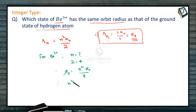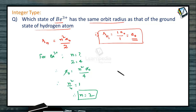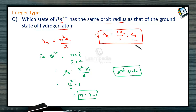Therefore n² / 4 = 1, so n = 2. The second orbit of the beryllium ion will have the same radius as the first orbit of the hydrogen atom. So n = 2 is the answer.